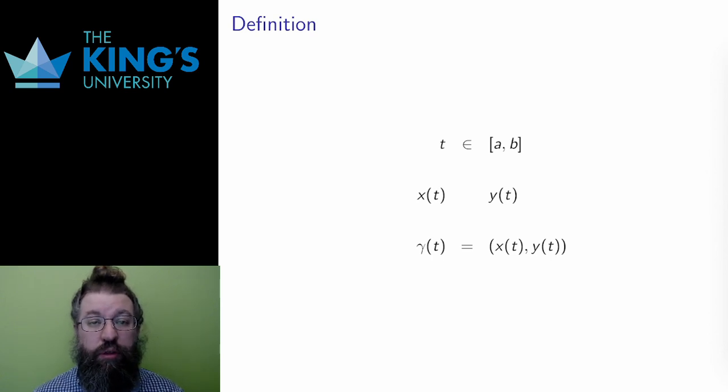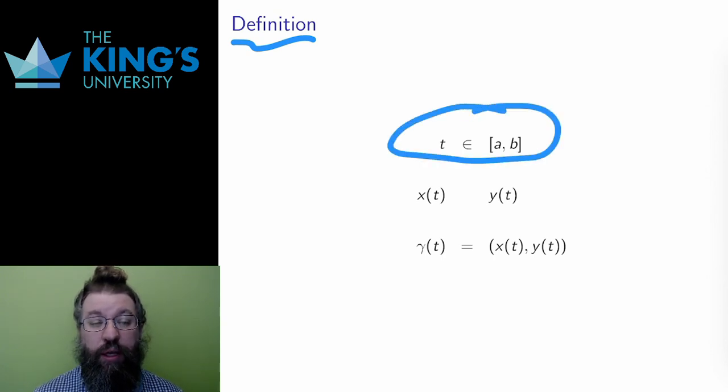So let me get to the definition. A parametric curve starts, unsurprisingly, with a parameter. Usually this is t for time, and the parameter has a range from a to b. These are the time values for motion along the curve. Then there are two functions, x(t) and y(t). These are the two coordinates depending on time.